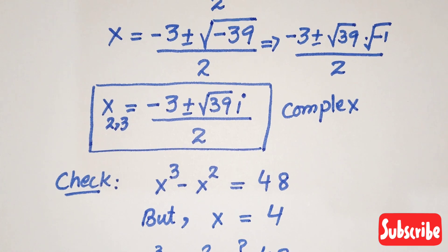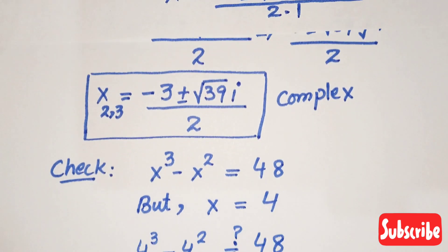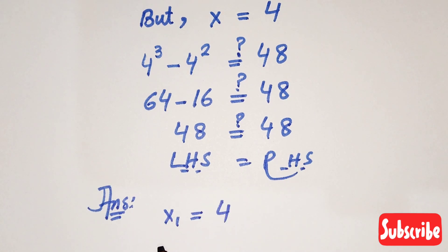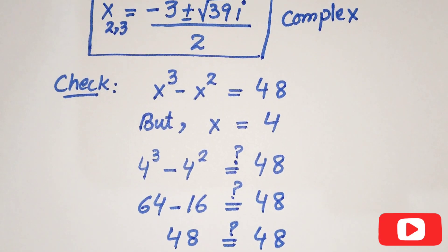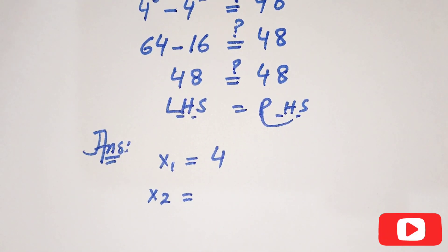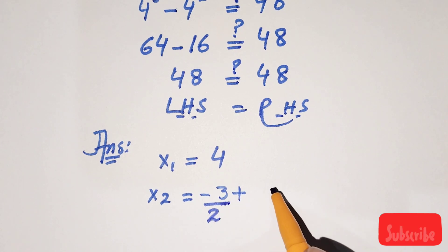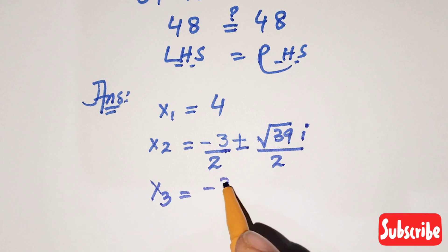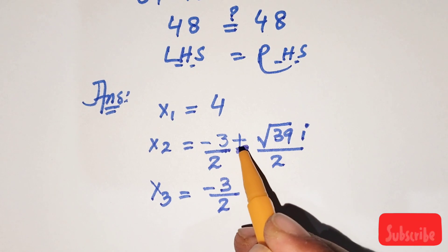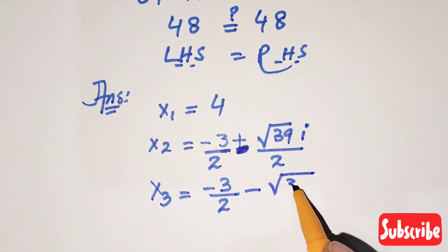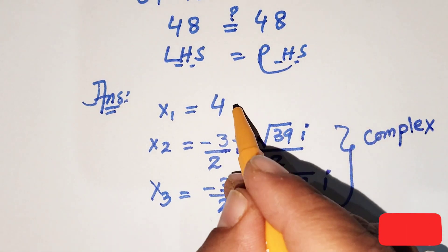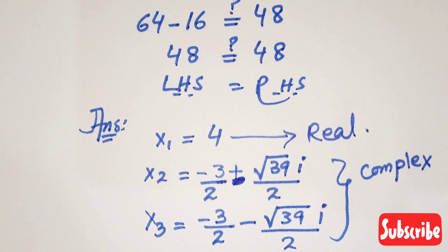Our complete answer: x₁ equals 4 (real solution); x₂ equals negative 3 over 2 plus (square root of 39 over 2) times i; and x₃ equals negative 3 over 2 minus (square root of 39 over 2) times i. The two complex solutions are imaginary, and we have only one real solution. In total, we found three values of x.